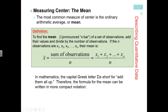The symbol that we use for mean is x-bar. X-bar is the symbol we use for mean if we're talking about the mean of a sample. That's important — x-bar is the mean of a sample.